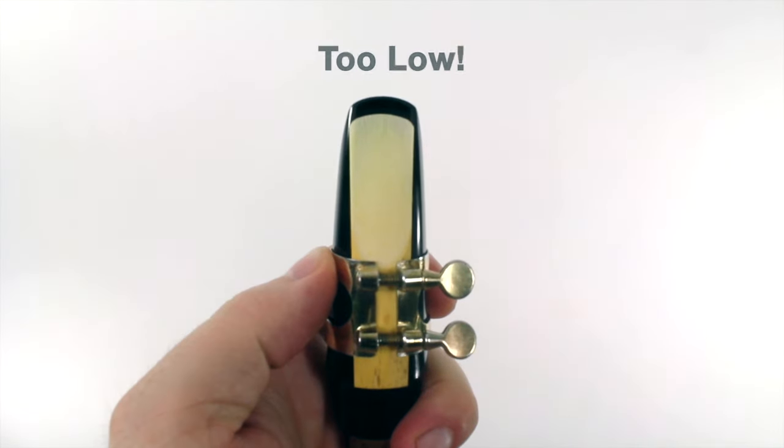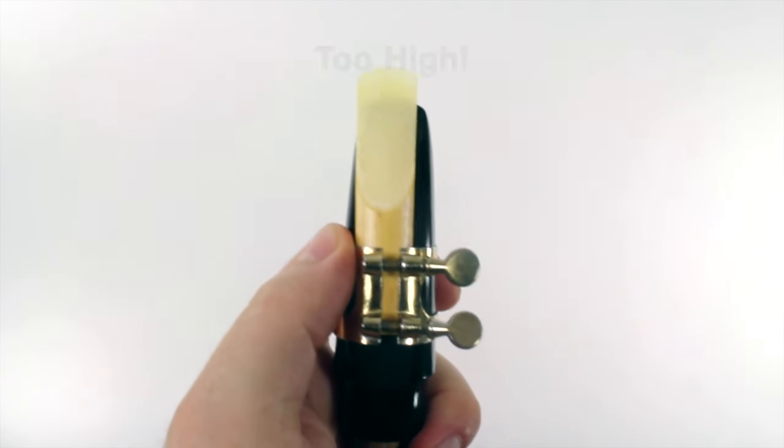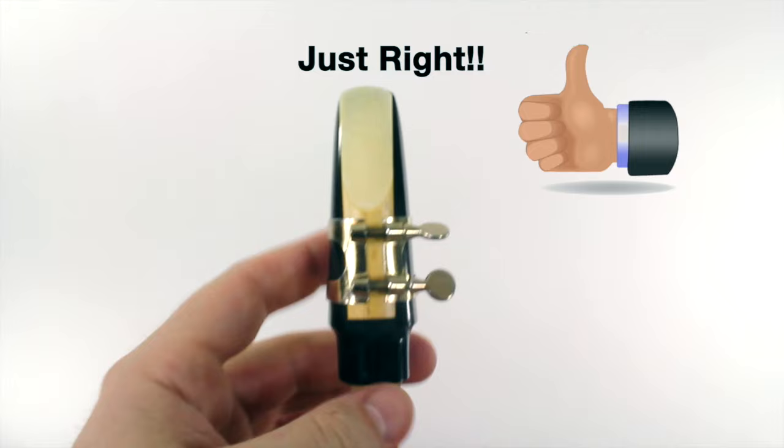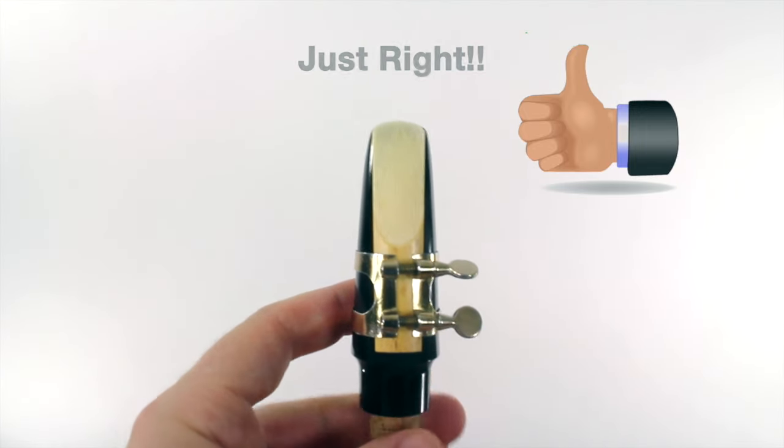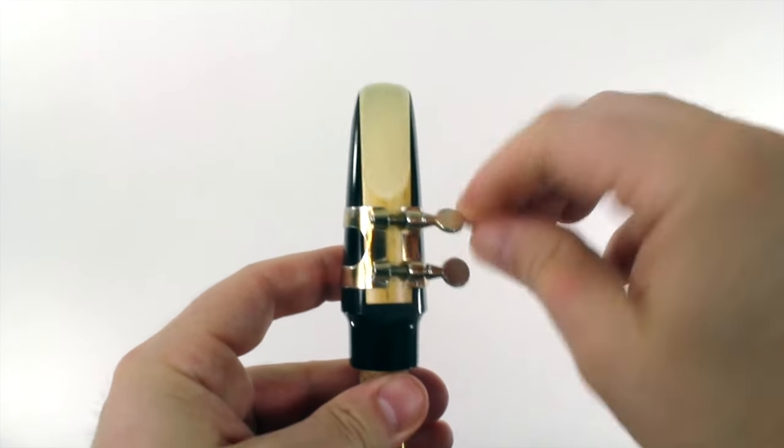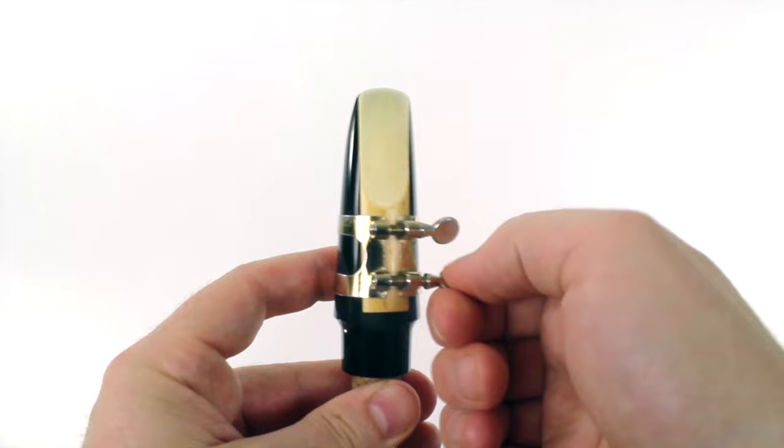That reed is too low and that reed is too high. That reed is perfect. So make your reed look just like mine and then we're going to tighten the screws of the ligature.